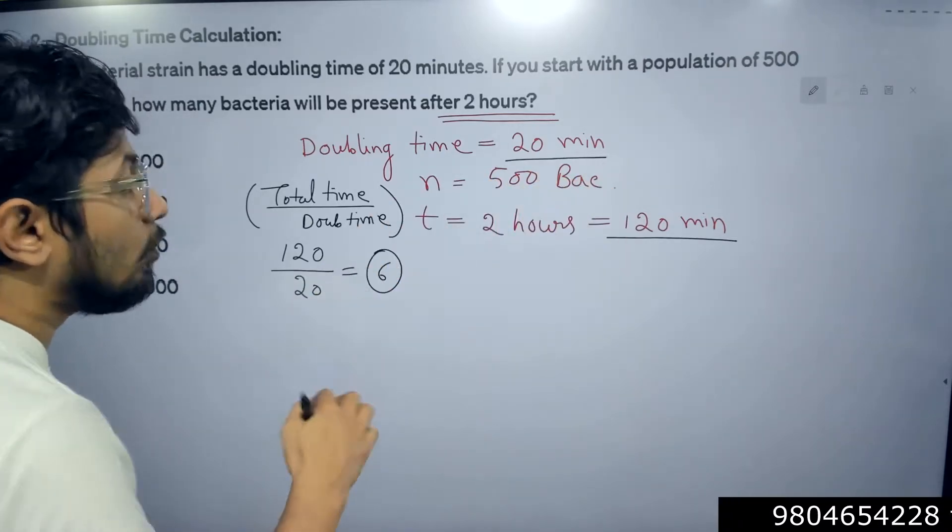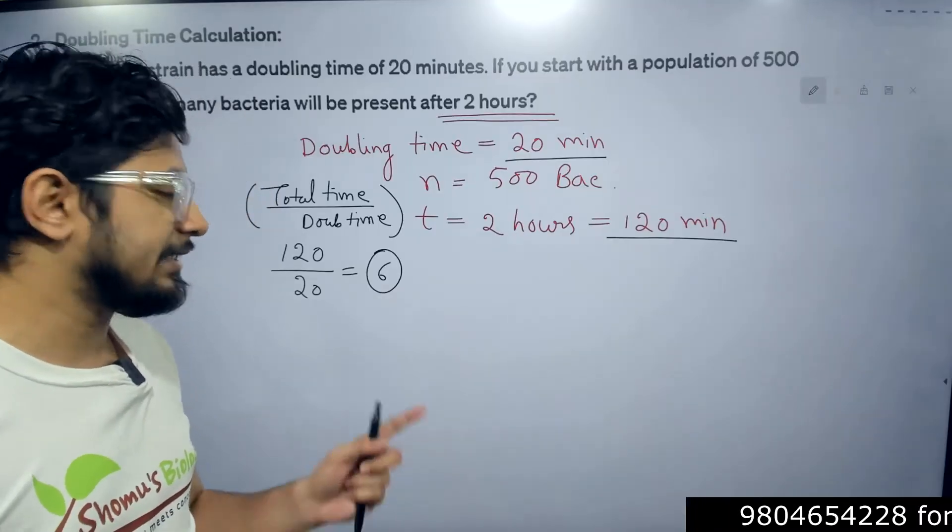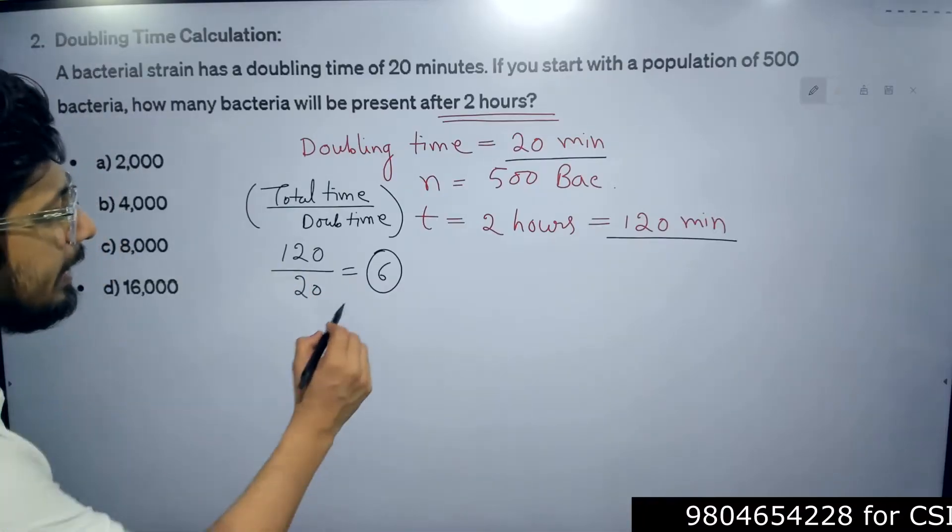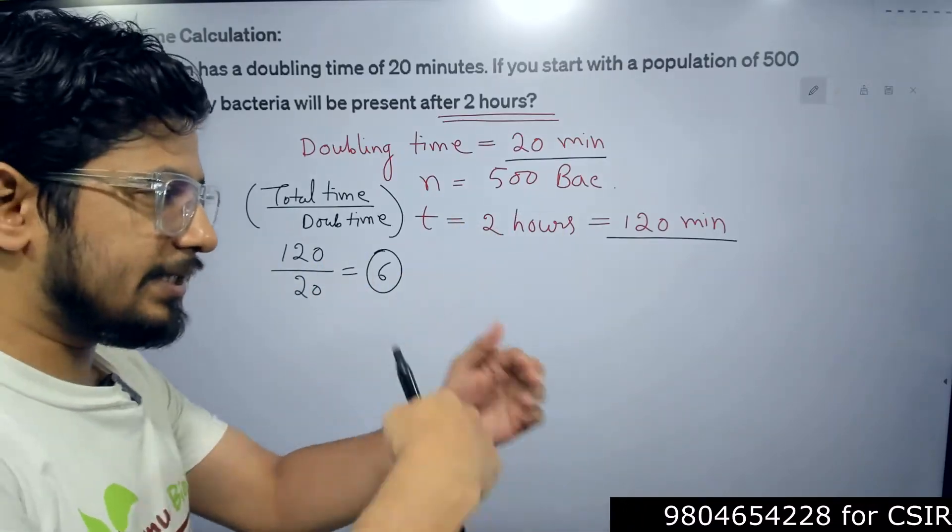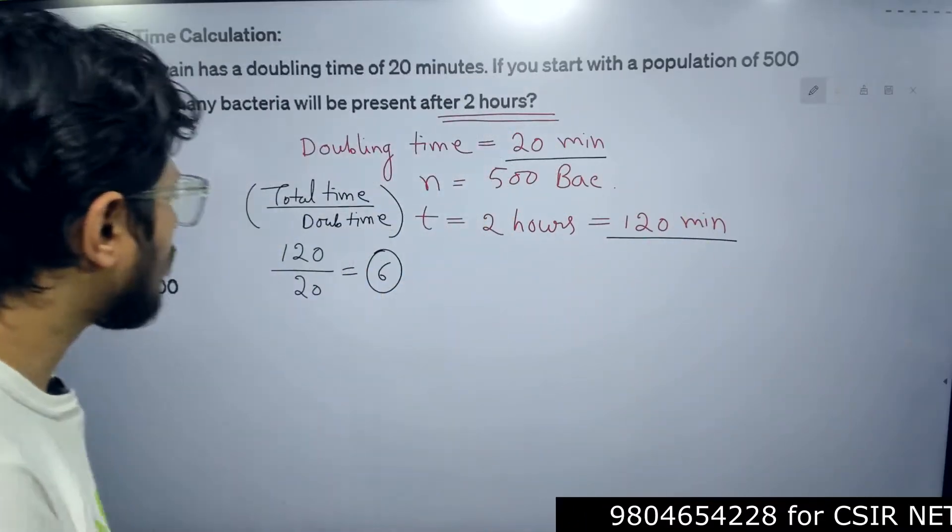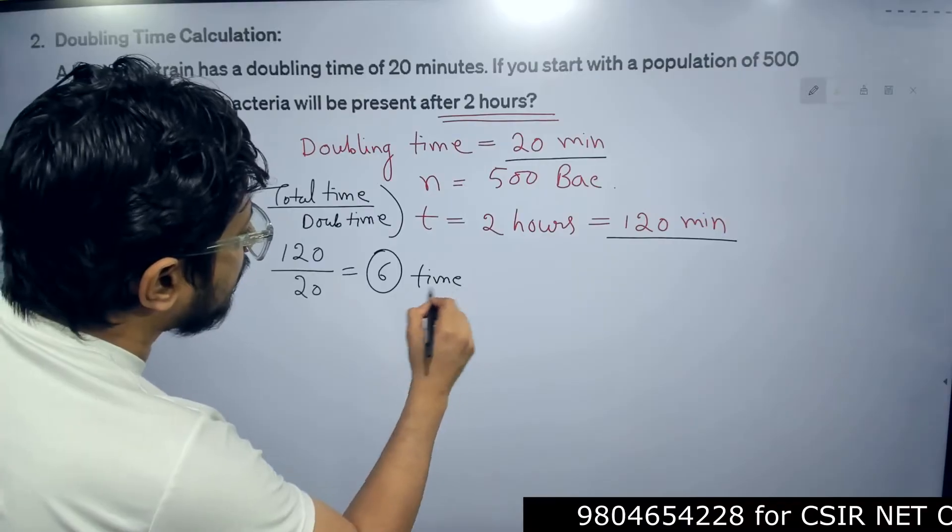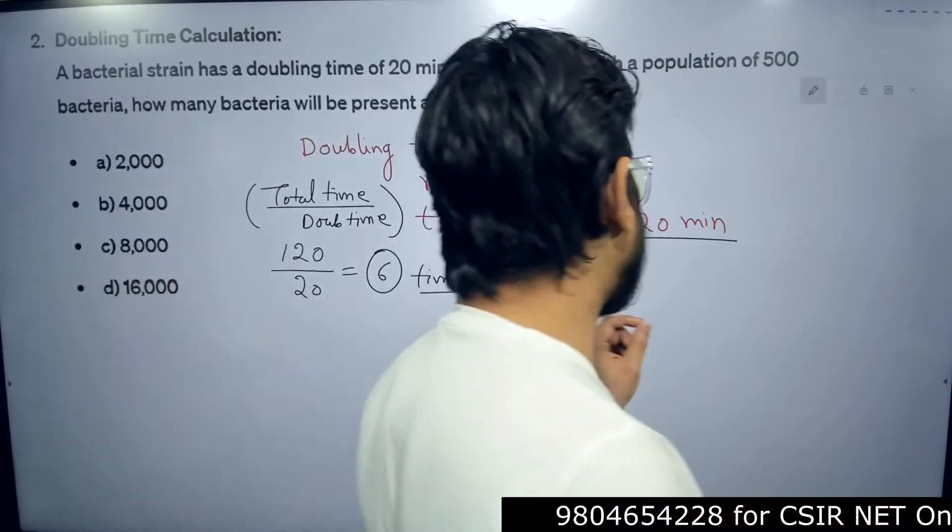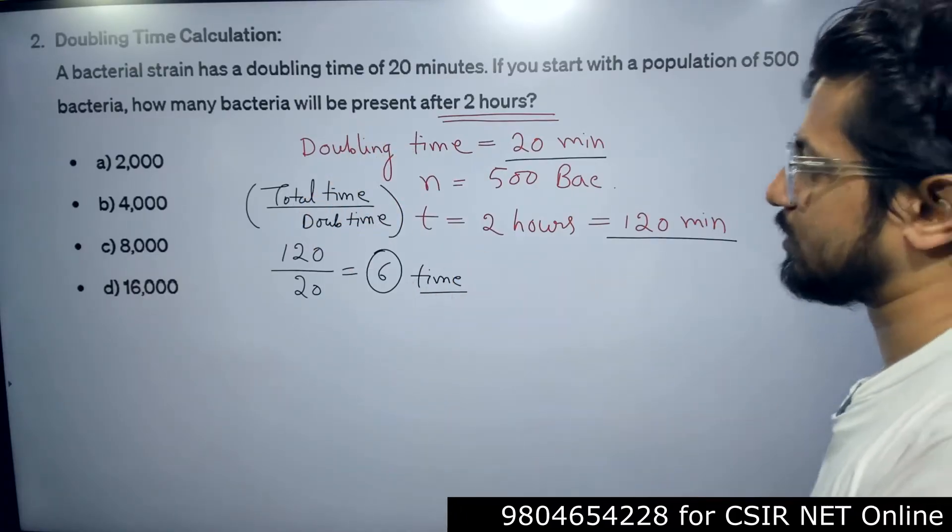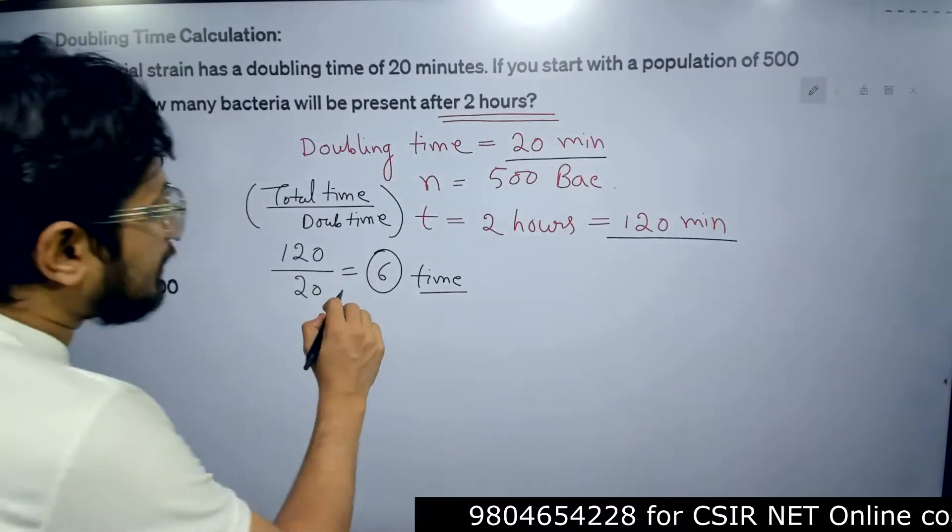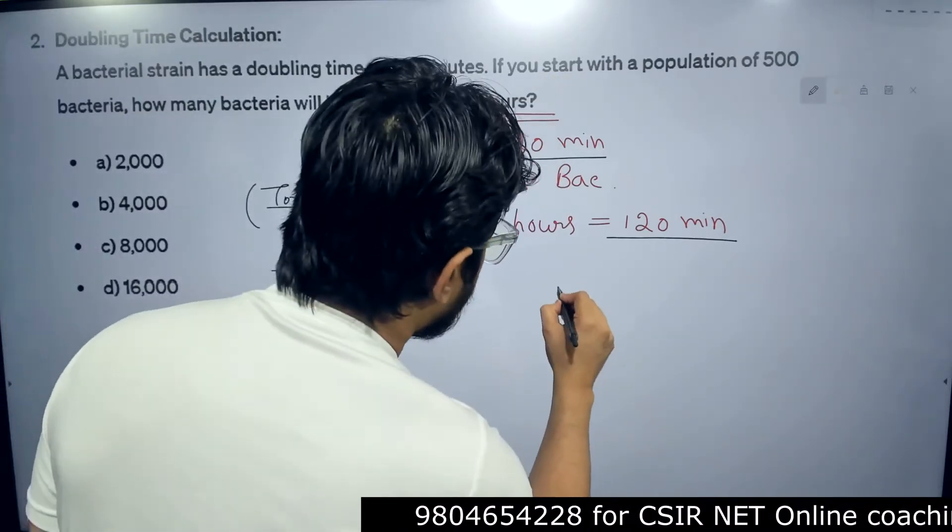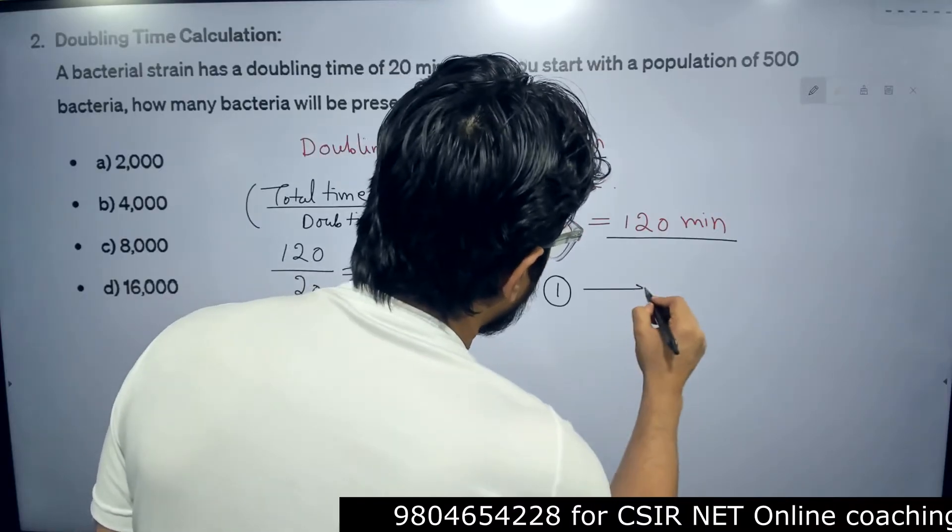So the number of divisions, that is 6 times. So the bacteria gets divided 6 times for that time frame. 6 times the bacteria will divide. There will be 6 times division like that. So total 6 times division is possible by the bacteria at this frame where the total time is 120 minutes, the doubling time is 20 minutes. Now for 6 times, how many bacteria can be produced from one bacteria? If you start the journey from one bacteria.